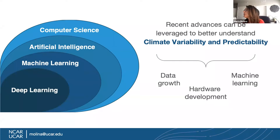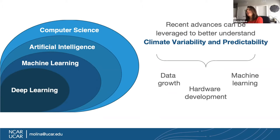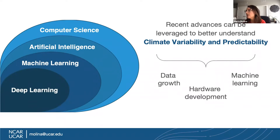We know that data availability has grown thanks to the internet and web users. We also have new instruments on satellites at unprecedented resolution, providing a lot of high-quality data. Images from the internet have been used to create large datasets, such as one called ImageNet. That dataset was created by a group at Stanford University, who took images of cats, dogs, bicycles, and so on, and built a labeled dataset to help train these data-hungry models.